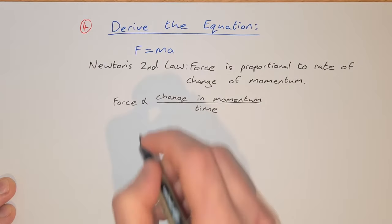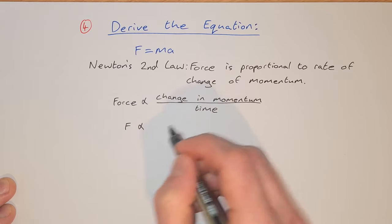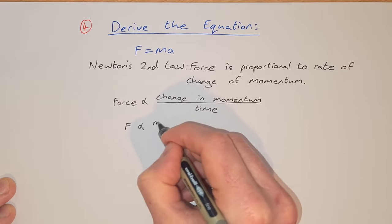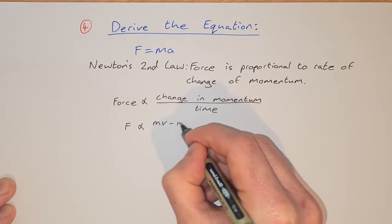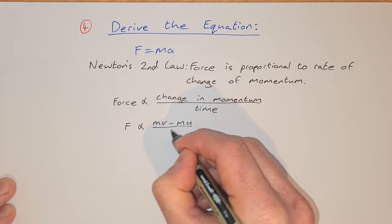This can be written as f is proportional to change in momentum, which is m times the final velocity minus m times the initial velocity, all over t.